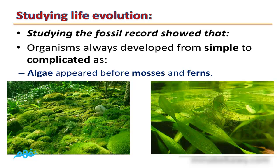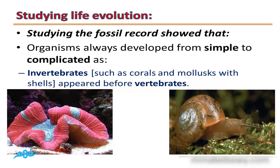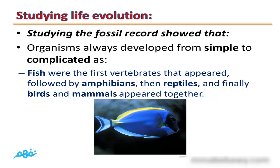Organisms always developed from simple to complicated: algae appeared before mosses and ferns, angiosperms appeared before gymnosperms, and invertebrates such as corals and mollusks appeared before vertebrates. Fish were the first vertebrates, followed by amphibians, then reptiles, and finally birds and mammals appeared together.